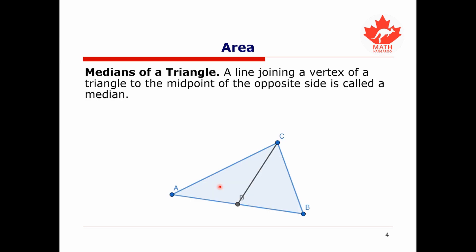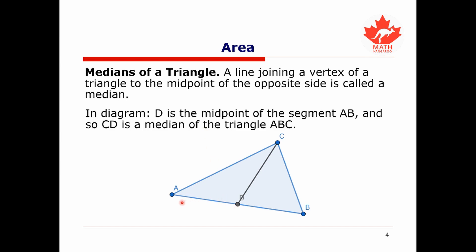Next let's talk about medians of a triangle. If we pick a vertex of our triangle and draw a line segment from that vertex to the midpoint of the opposing side, we have what's called a median. In this diagram, D is the midpoint of line segment AB, so CD is a median of triangle ABC. Every triangle actually has three medians.